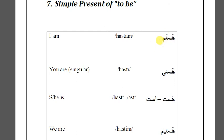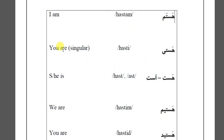Hastam — I am. Remember, the present verbal ending for 'I' is -am, that's why you have -am here. So hastam means 'I am.' The next one is 'you are' for singular: hasti.